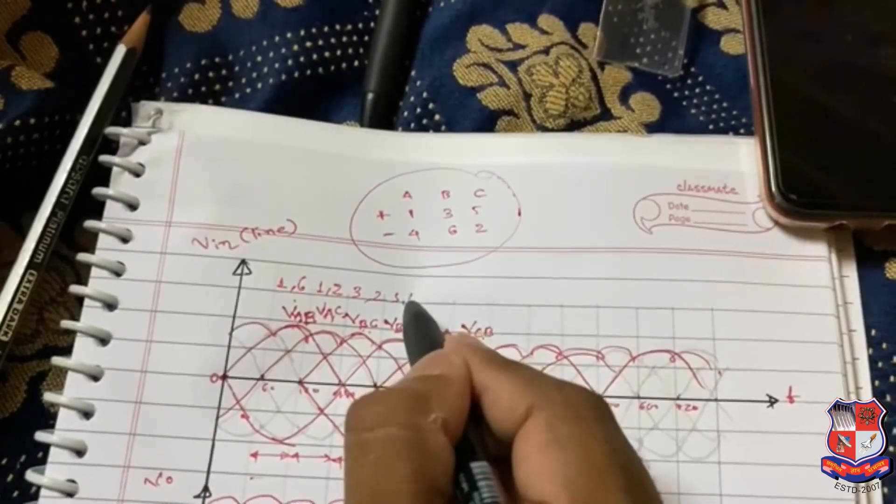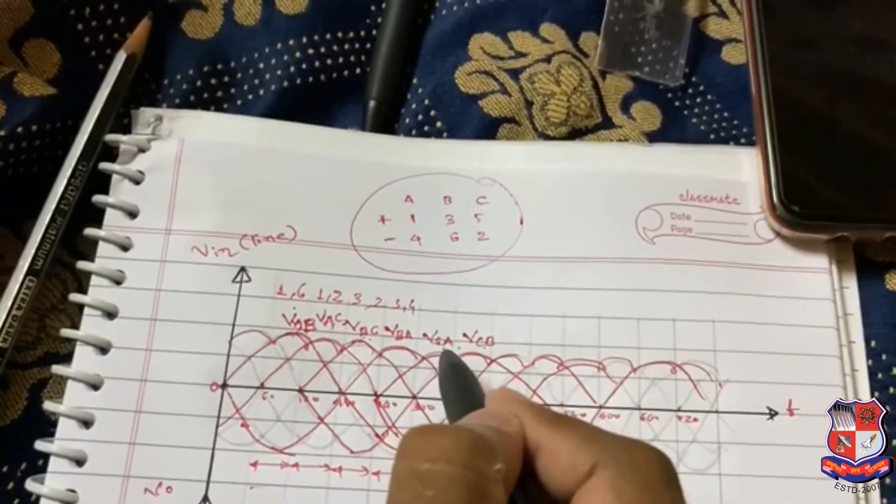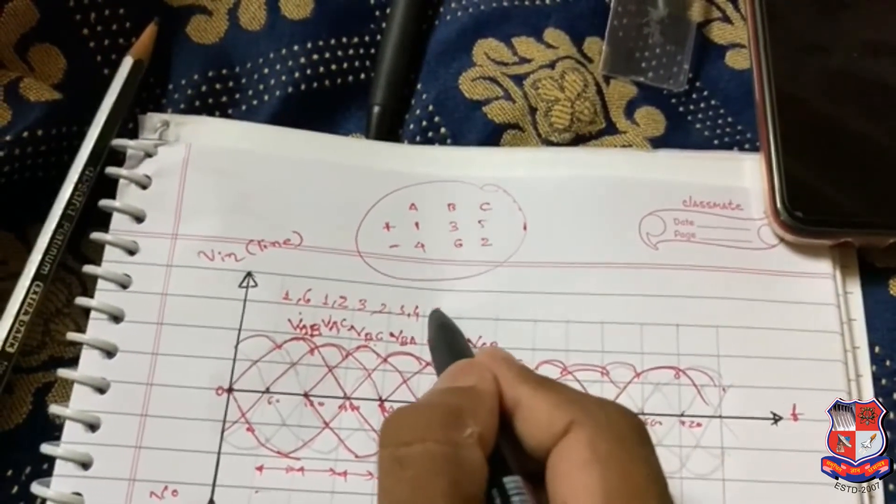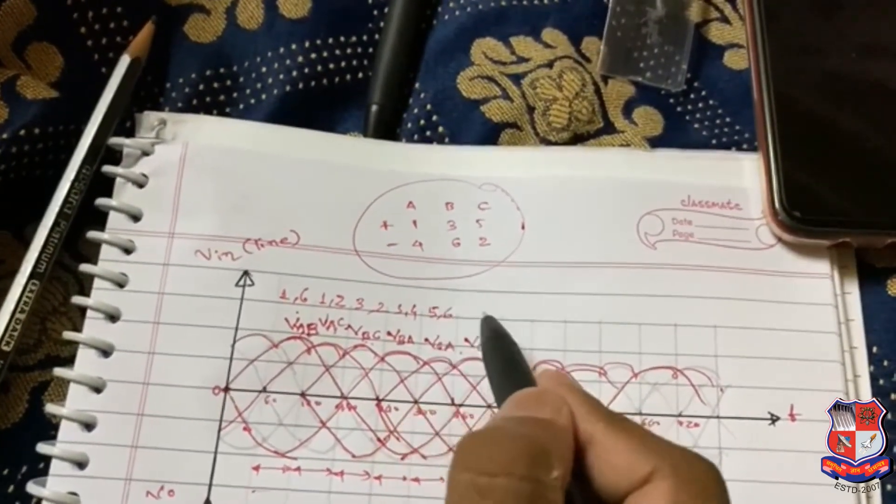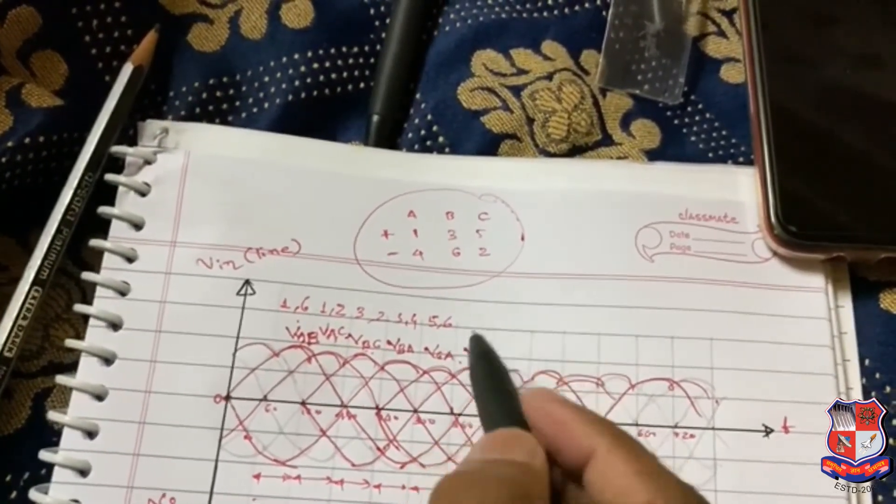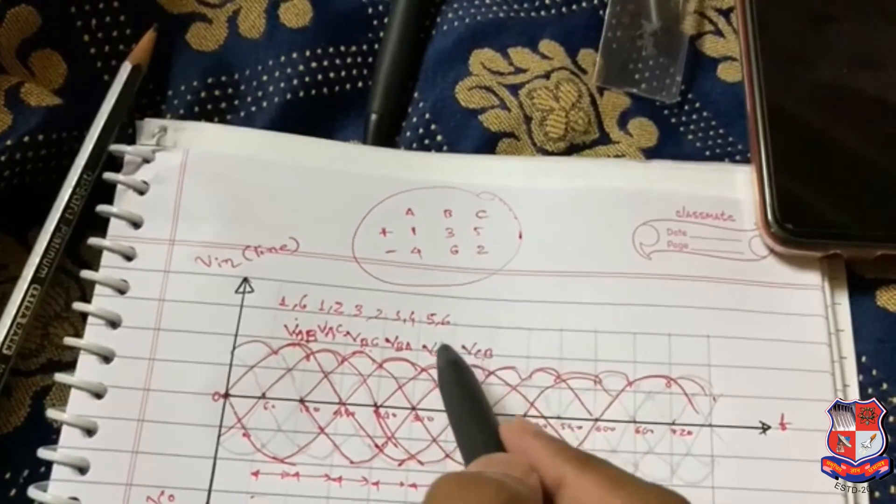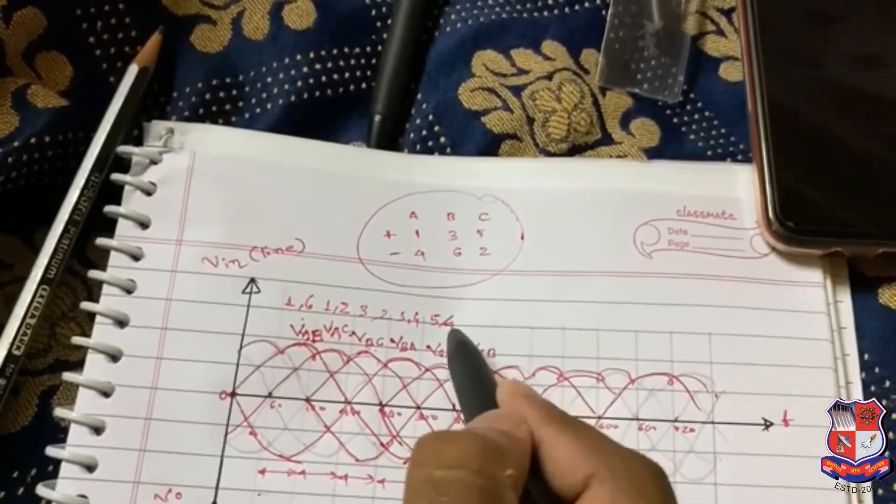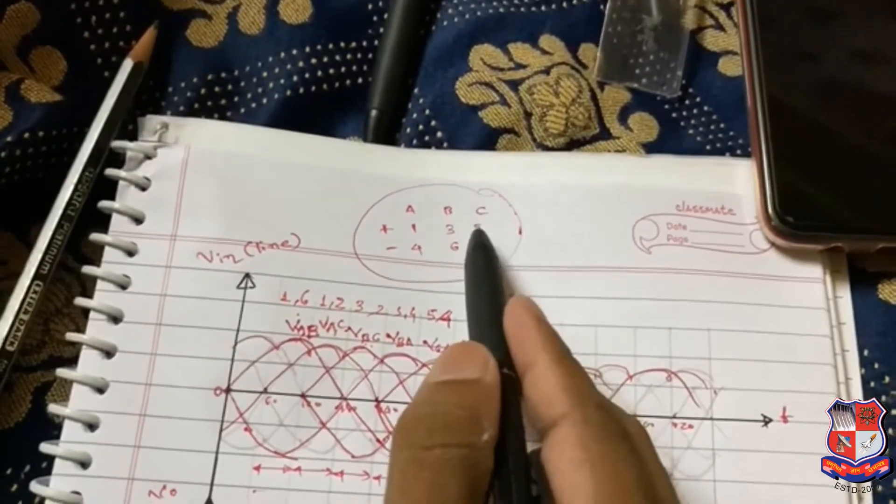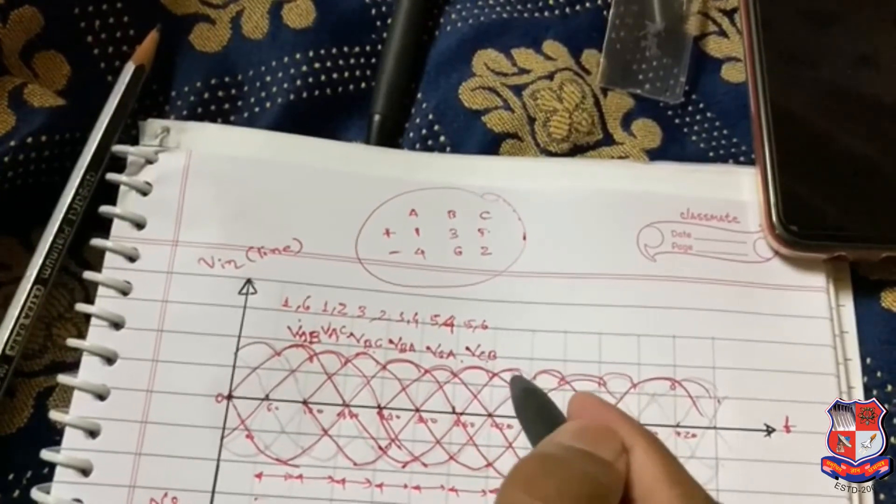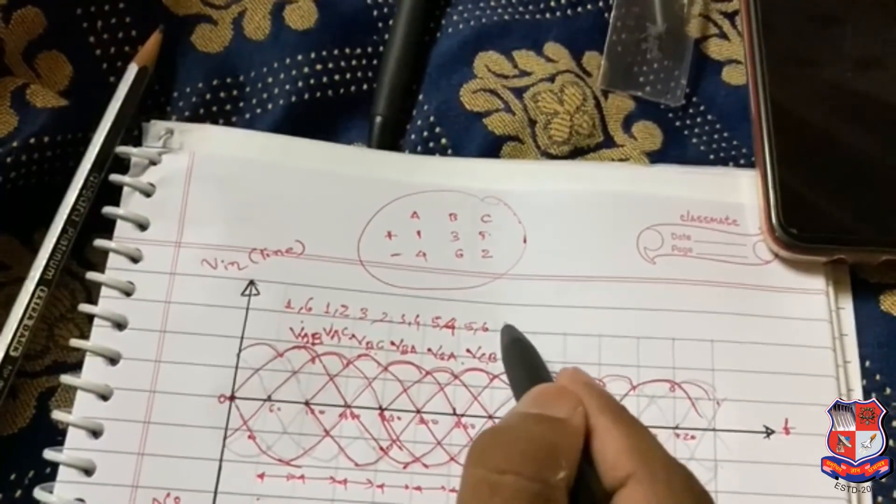VBA is 3, 4. Now CA is 5, 4. And CB is 5, 6. Again this is 1, 6, and so on.